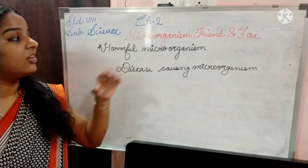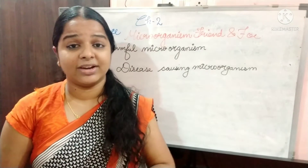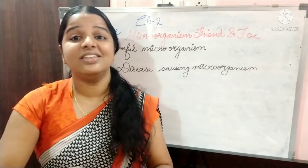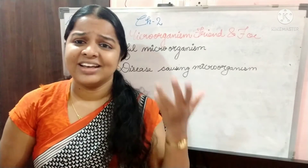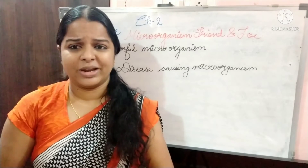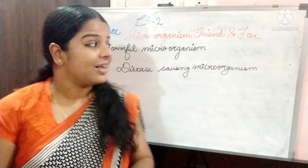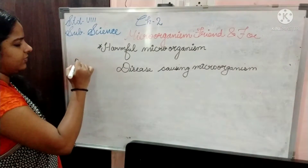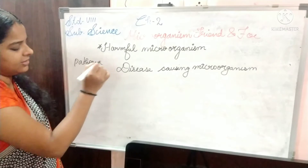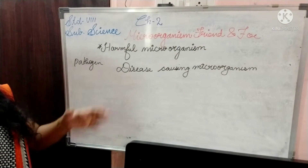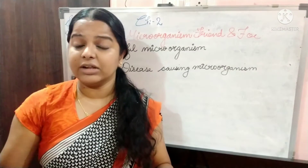Now we are going to move on to the next topic: the harmful effects of microorganisms. The main harmful effect is that they cause disease in humans, plants, and animals — they are spreading diseases everywhere. The disease-causing microorganisms are called pathogens. According to the disease, diseases are of two types: one is communicable and another is non-communicable.